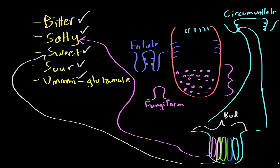We're able to taste all five different tastes everywhere on the tongue. It's not as if bitter compounds can only be tasted in one region, salty compounds only in another region, and sweet compounds only in another. That's not the case. Instead, we're able to taste all five compounds throughout the entire tongue, with most taste buds concentrated in the anterior part.